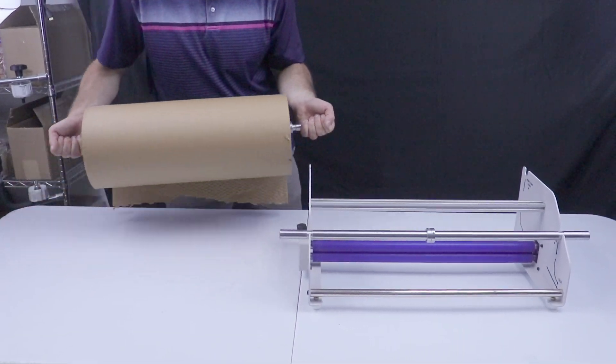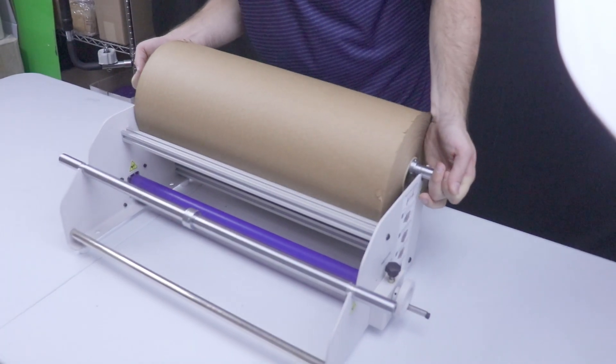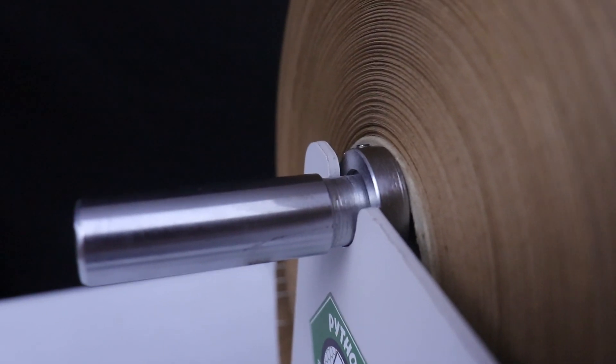Step 3. With the bar now through the roll, lift the cross bar by its ends and place it back into the grooves of the dispenser. Make sure your roll is unwinding from the bottom in this step.